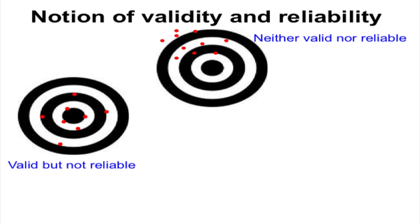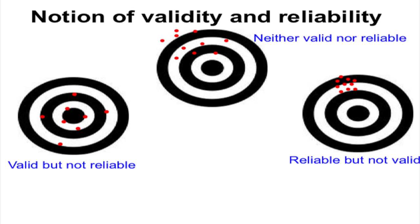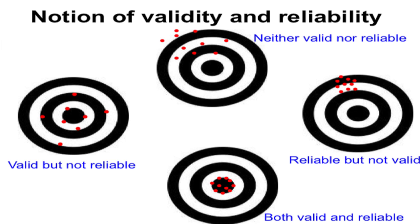Validity is accuracy and reliability is what you also call reliability. In the third situation, all the attempts are very close to each other — the instrument is precise — but it is far away from the center: reliable but not valid. The fourth example is both reliable and valid because all the attempts are close to each other and they are getting close to the center. The notion of validity and reliability that you intuitively understand through these pictures is what you have to try to establish for your instrument.